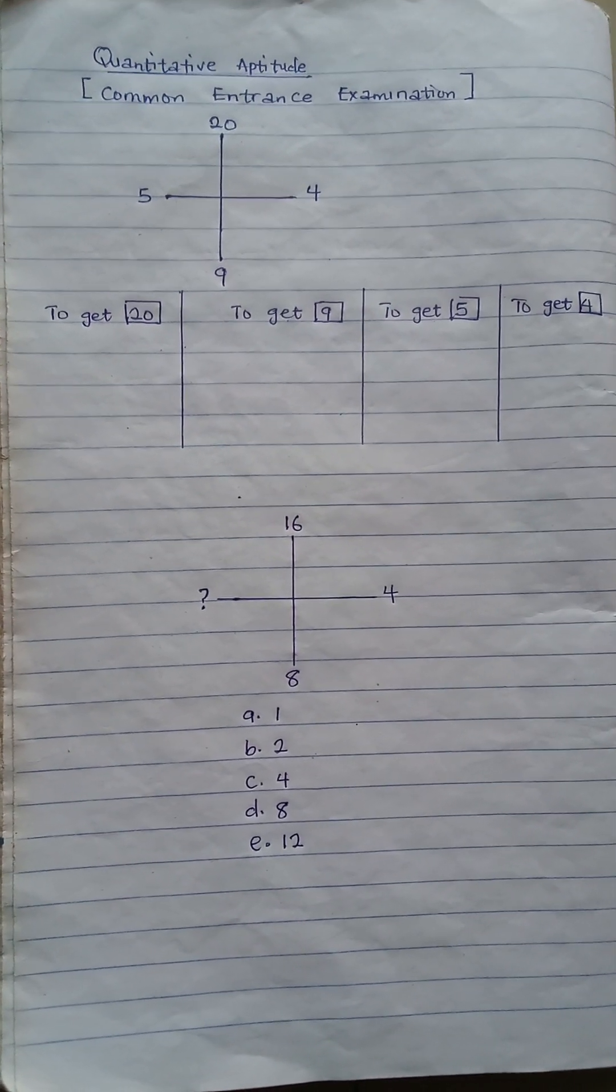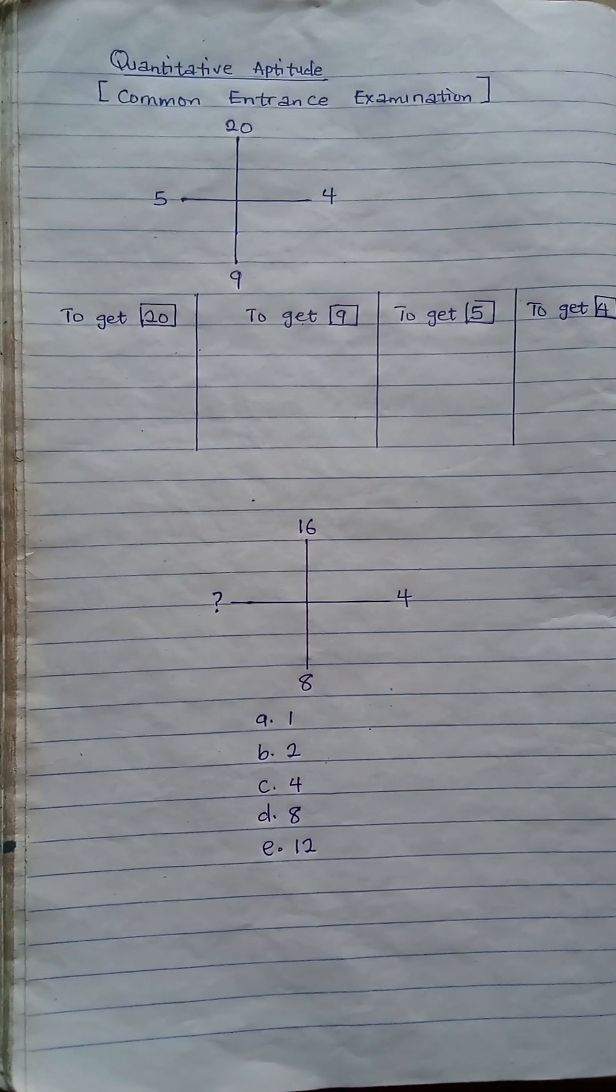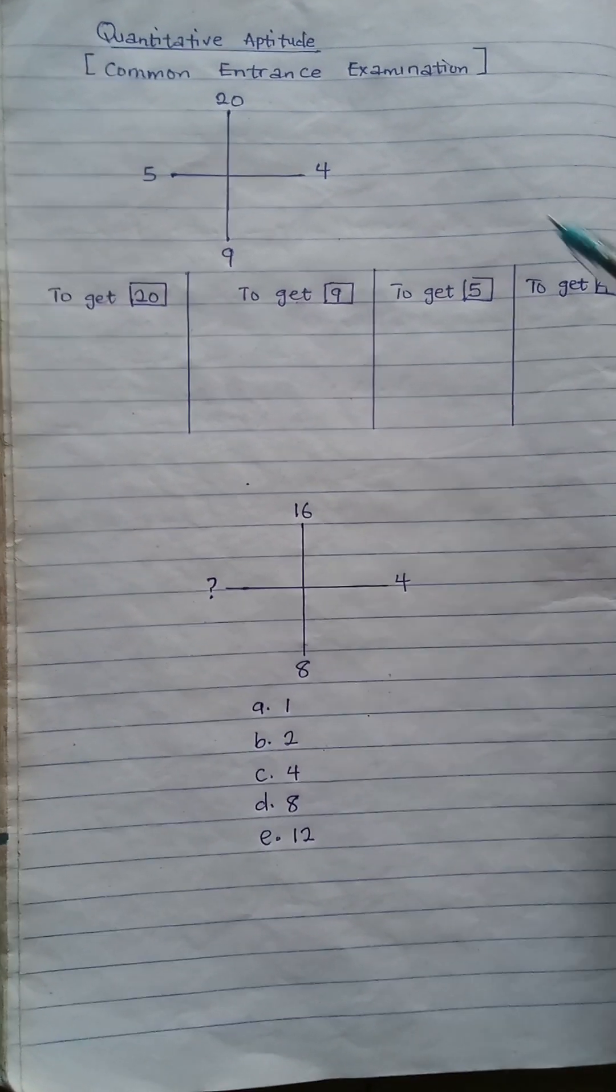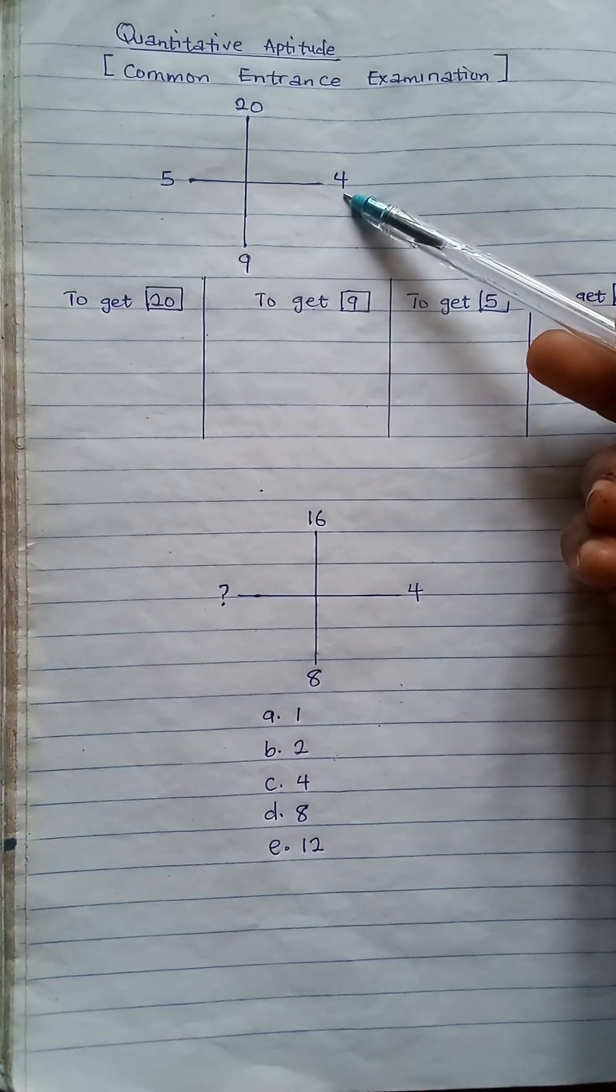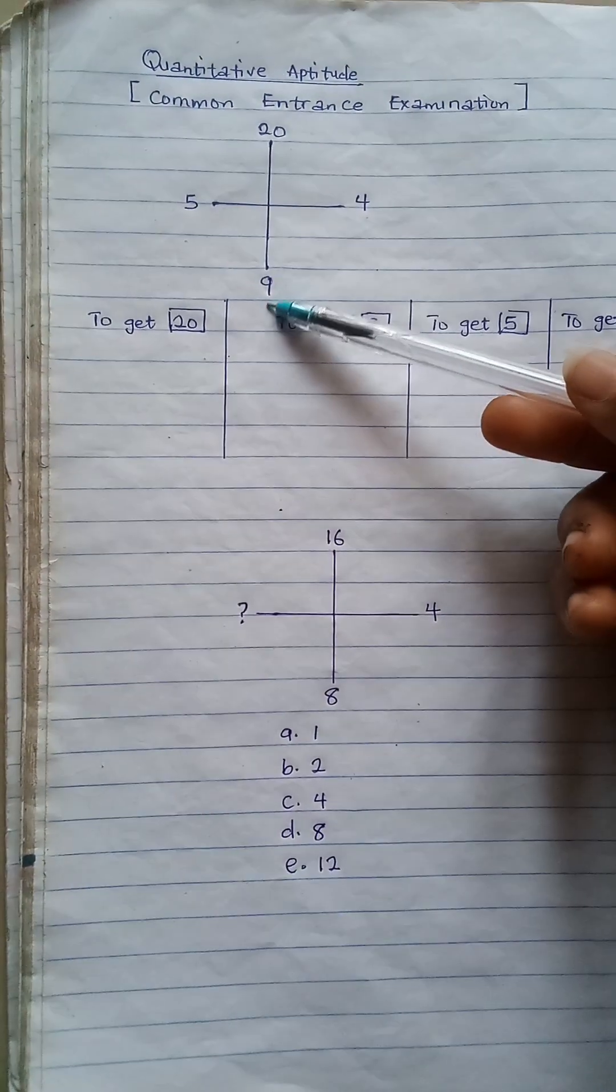Today I'll be solving this common entrance quantitative aptitude test. This is an example that we'll be looking at. We're going to look at how to get 20, how to get 4, how to get 9, and how to get 5.